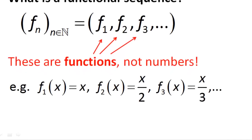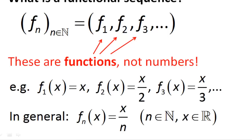As an example, suppose f_1(x) equals x, f_2(x) equals x over 2, and so on, where we allow x to be any real number. Then the general rule for our functional sequence is f_n(x) equals x over n, for all natural numbers n and real numbers x.